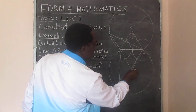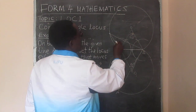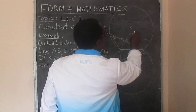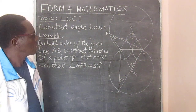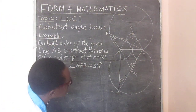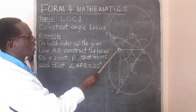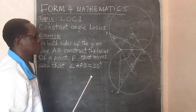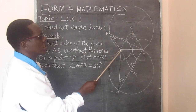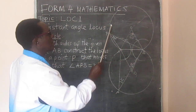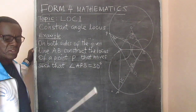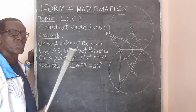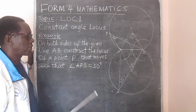This angle is 30 because this angle at the center is 60. This angle APB here is 30 degrees — this is an example of P. This angle is 60 at the center, so the angle at the circumference is 30. We have been able to construct the locus of a point P where the angle APB is always 30 degrees, based on the theorem that the angle subtended at the center is always equal to two times the angle at the circumference.